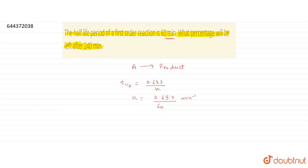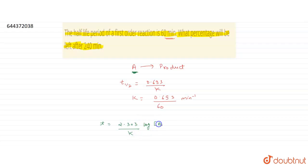Now we need to find what percentage of A is left after 240 minutes. For a first order reaction, the integrated rate law is: t = (2.303 / k) × log([A₀] / [Aₜ]), where A₀ is the initial concentration of A and Aₜ is the concentration of A remaining at time t.